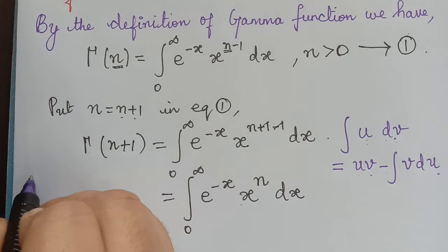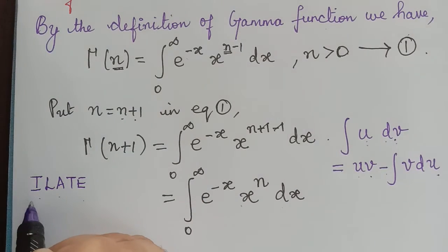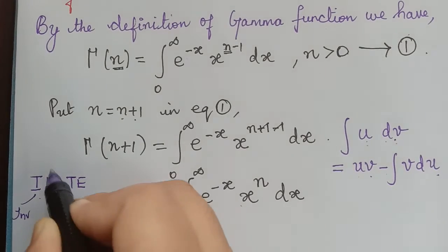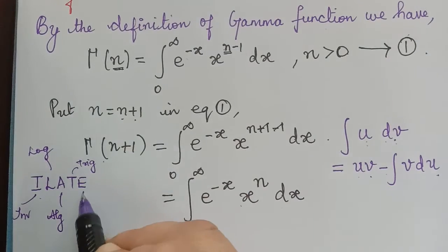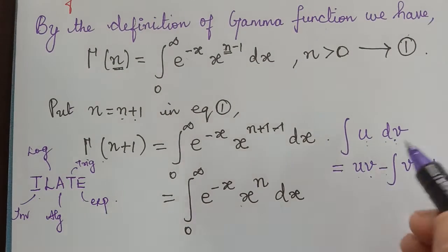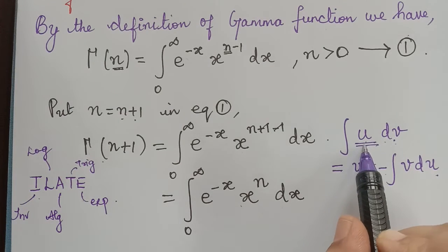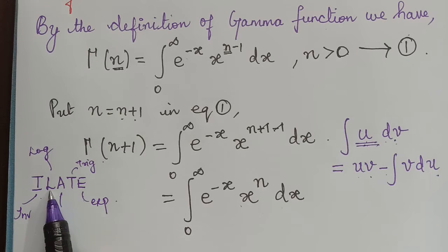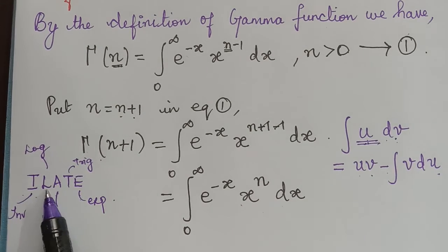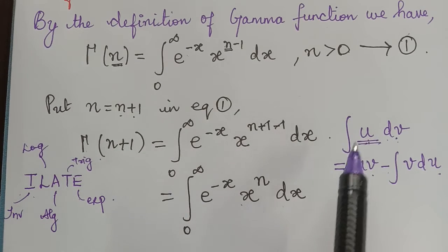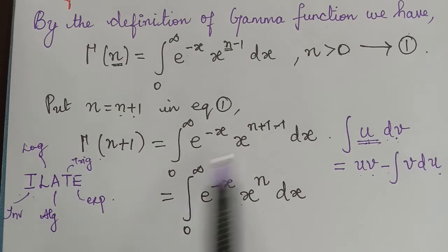To choose u and dv, we make use of the ILATE rule, where I stands for inverse function, L for logarithmic function, A for algebraic function, T for trigonometric function, and E for exponential function. We choose u according to this order: inverse first, then logarithmic, then algebraic, then trigonometric, and finally exponential.